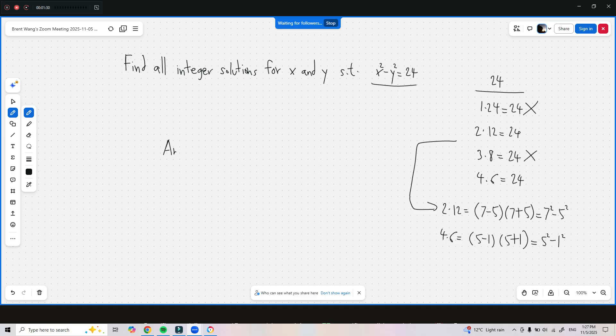So, the answer to this question is x equals plus or minus 7, and y equals plus or minus 5. And x equals plus or minus 5, y equals plus or minus 1.